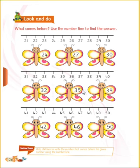Now you see. Thirty-five. Thirty-five se pehle number konsa hatha? Thirty-four. Before which number will come before 35? Thirty-four. Correct.